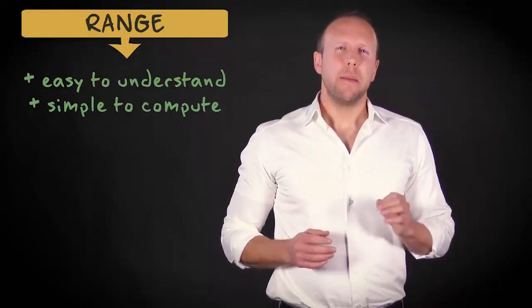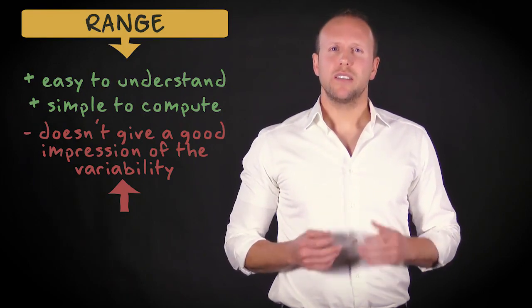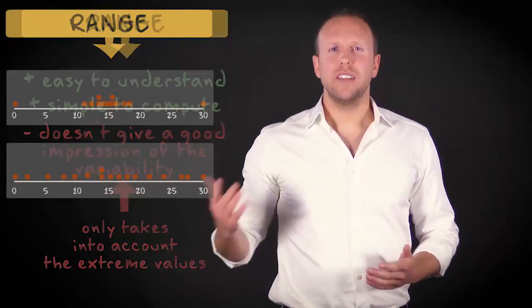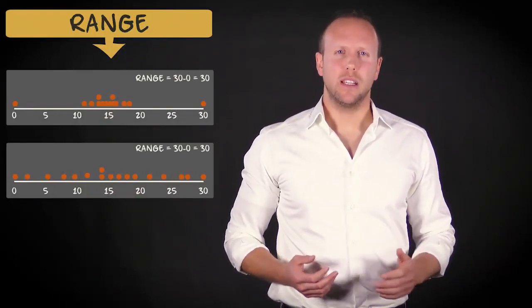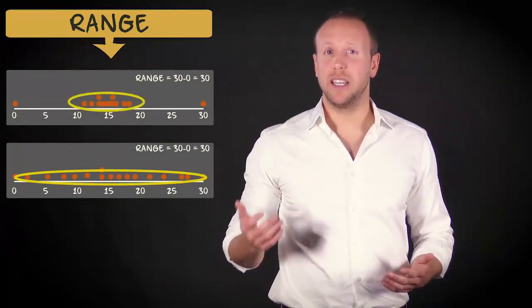However, in many cases it doesn't give a good impression of the variability of the data. The reason is that it only takes into account the extreme values. Look at these two distributions. They have the same range, but you can see immediately that the variability in the second distribution is very different from the variability in the first graph.